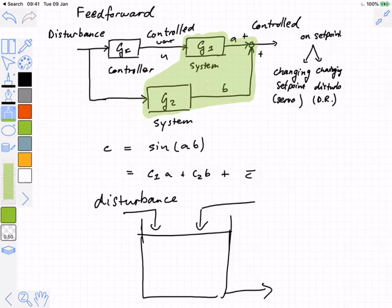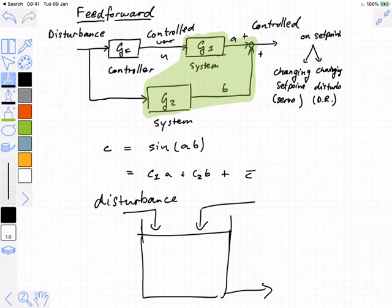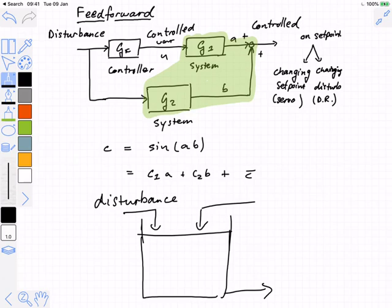It turns out this is a really easy piece of math to do. If we now talk about designing a feedforward controller to do this disturbance rejection, we've got two system models: a system model that tells us how the manipulated variable affects the control variable, and another transfer function that tells us how the disturbance affects the control variable. It is obvious, I hope to everybody, that the best thing a controller could do is to make the controlled variable completely insensitive to the disturbance.